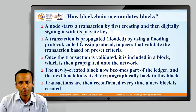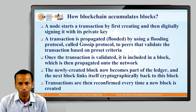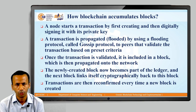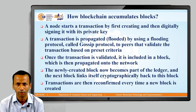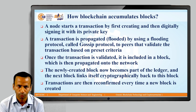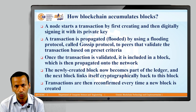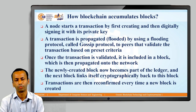Once the transaction is validated, it is included in a block which is then propagated onto the network. The newly created block now becomes part of the ledger. Once the transaction is validated by all nodes in the network, it is added into the block, and that block is connected in the blockchain network. The next block is then cryptographically linked back to this particular block, meaning a link is created between the newly created block and the previous block.